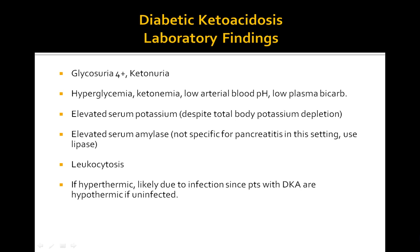To diagnose DKA, look for glycosuria — typically 4+ — and ketonuria, meaning ketones and glucose in the urine. Key lab findings include hyperglycemia, ketonemia, low arterial pH, and low plasma bicarbonate. Patients present with an increased anion gap metabolic acidosis, though sometimes they present with a non-anion gap acidosis due to urinary loss of ketones. Elevated serum amylase and elevated serum potassium are also noted, even in cases where the body has depleted total body potassium.